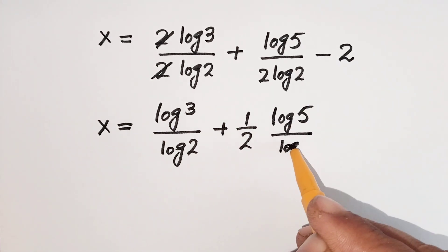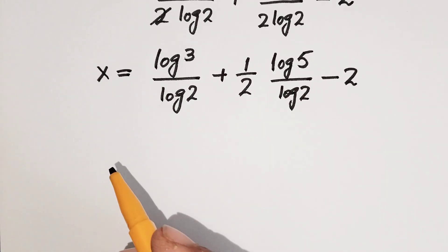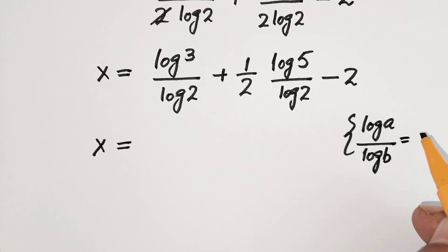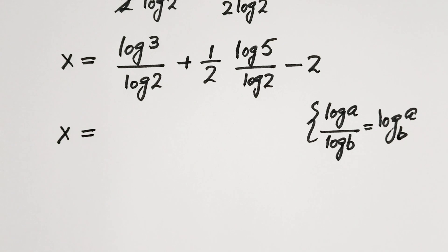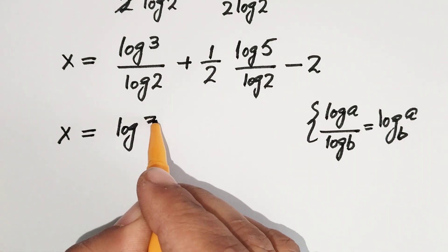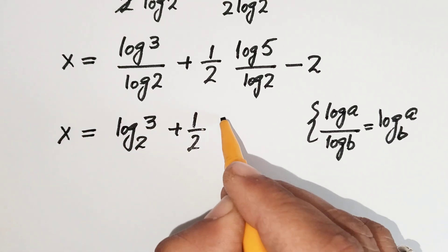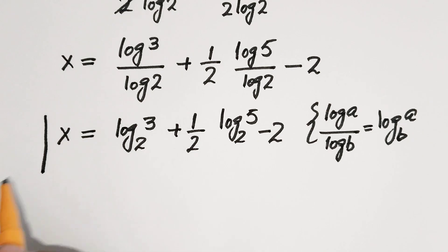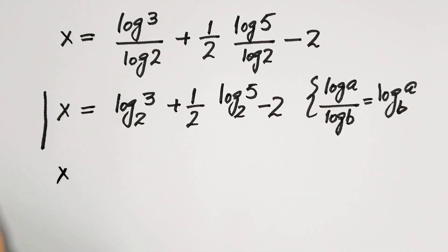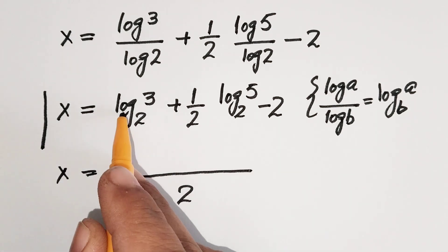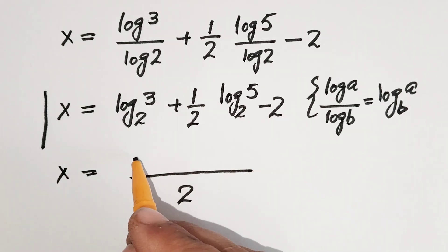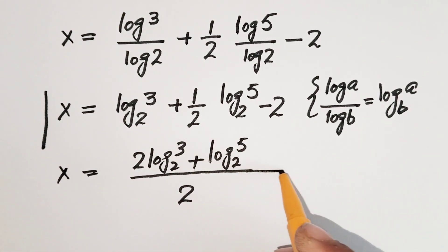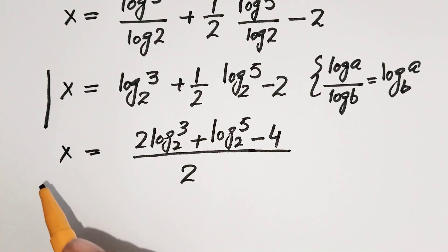Now x is equal to: using the change of base law that log a over log b equals log a to base b. This gives log 3 squared to base 2 plus one half log 5 to base 2 minus 2. We simplify by taking LCM of 2, giving x equals 2 log 3 to base 2 plus log 5 to base 2 minus 4, all over 2. That is our value of x.